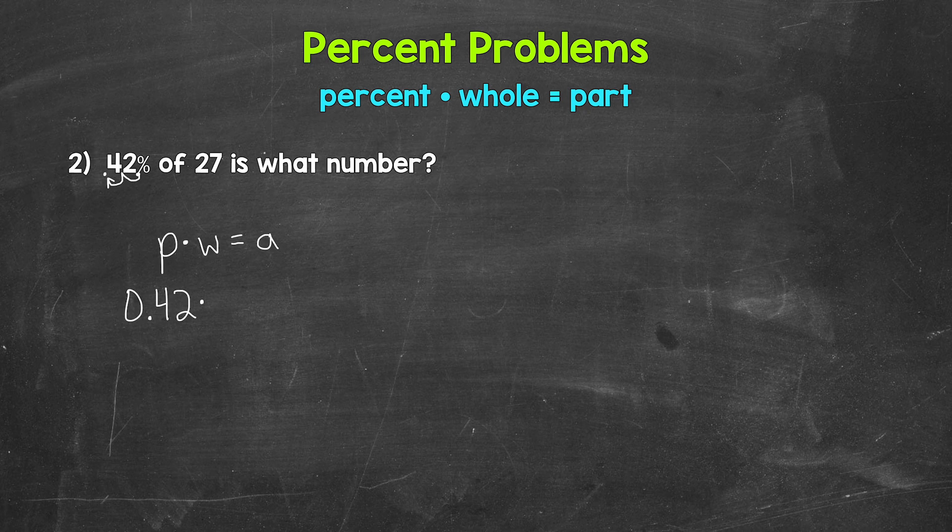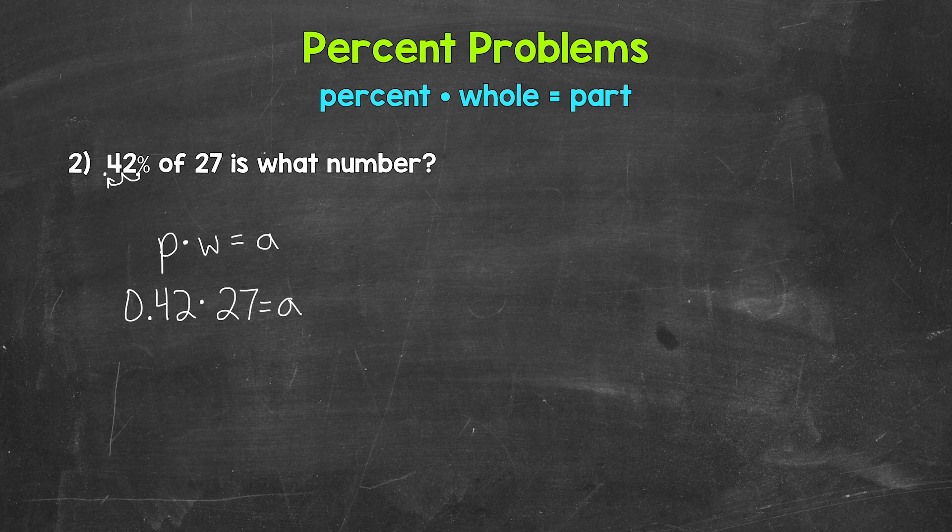Times the whole. Well, we have 42% of our whole amount, 27. So 27 is the whole. So we need to do 42 hundredths times 27 equals A, the part. The part is unknown, so we need that variable there. Now we solve.